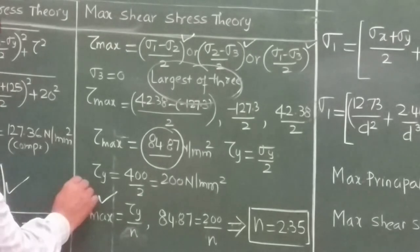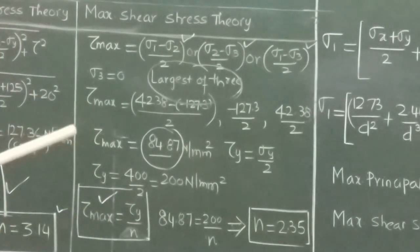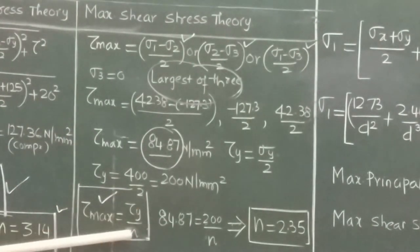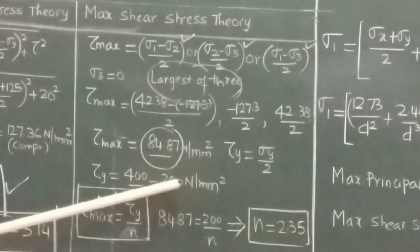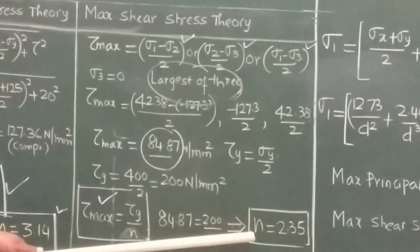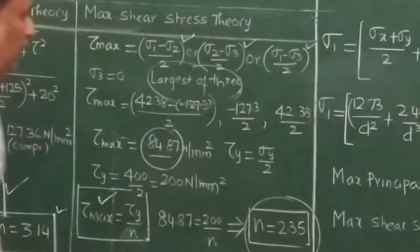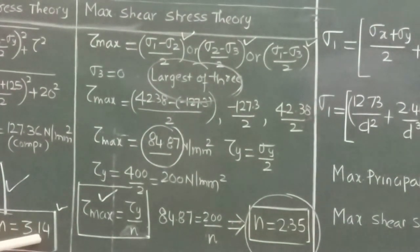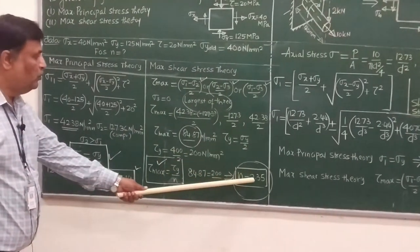According to maximum shear stress theory, failure occurs when the maximum shear stress reaches the shear stress at yield point divided by factor of safety. Taking the maximum shear stress value of 84.87 and equating to 200 divided by factor of safety, we get the factor of safety as 2.35. So we have two values: according to maximum principal stress theory n = 3.14, and according to maximum shear stress theory n = 2.35.